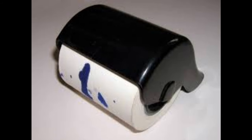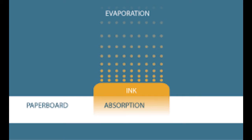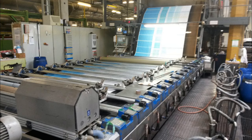Newspaper inks dry by absorption, and aniline and photogravure inks dry by evaporation. Modern inks, which dry on contact with paper, have been perfected and are used principally on high-speed rotary presses.